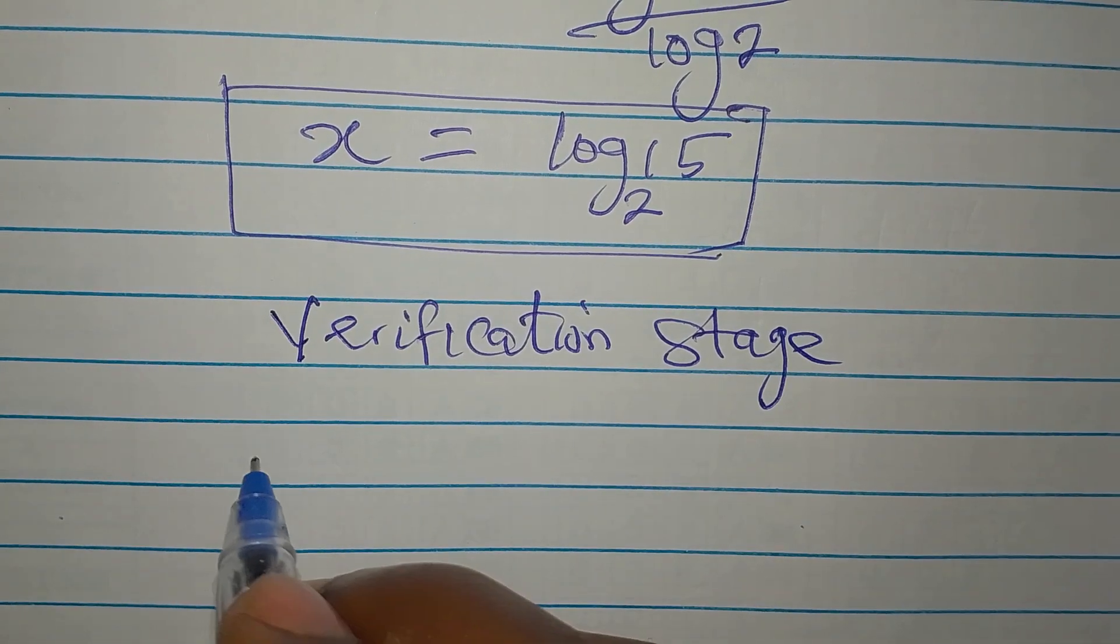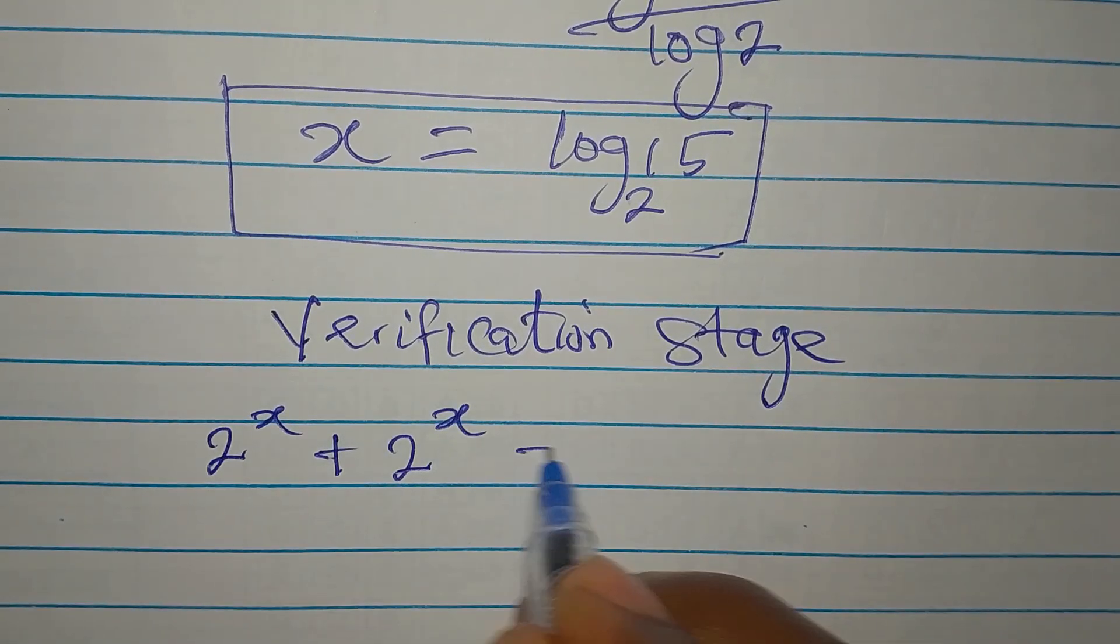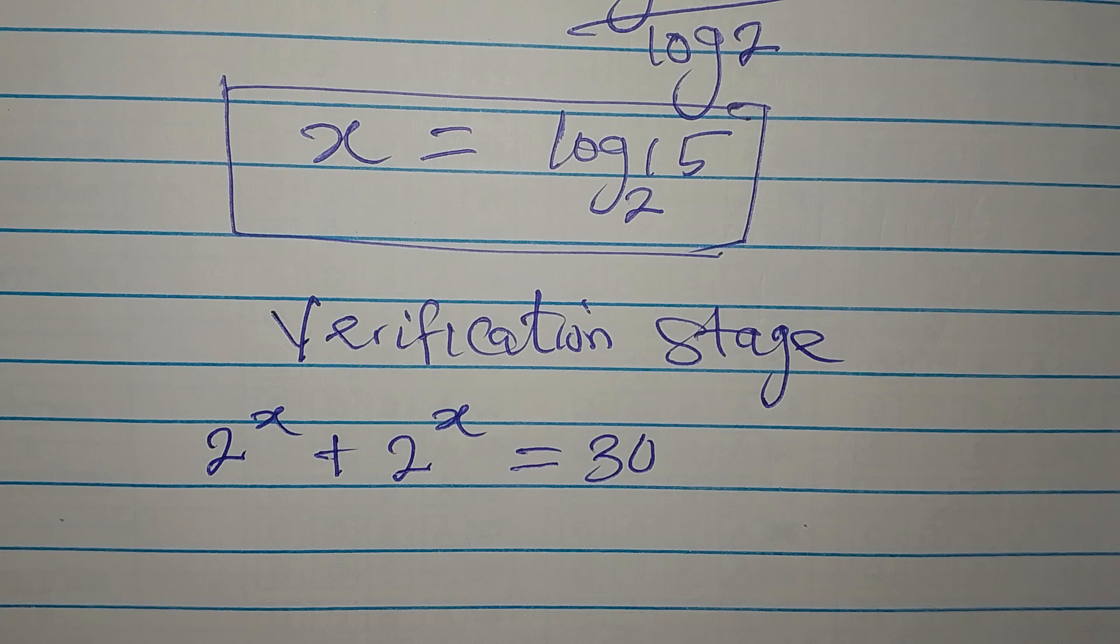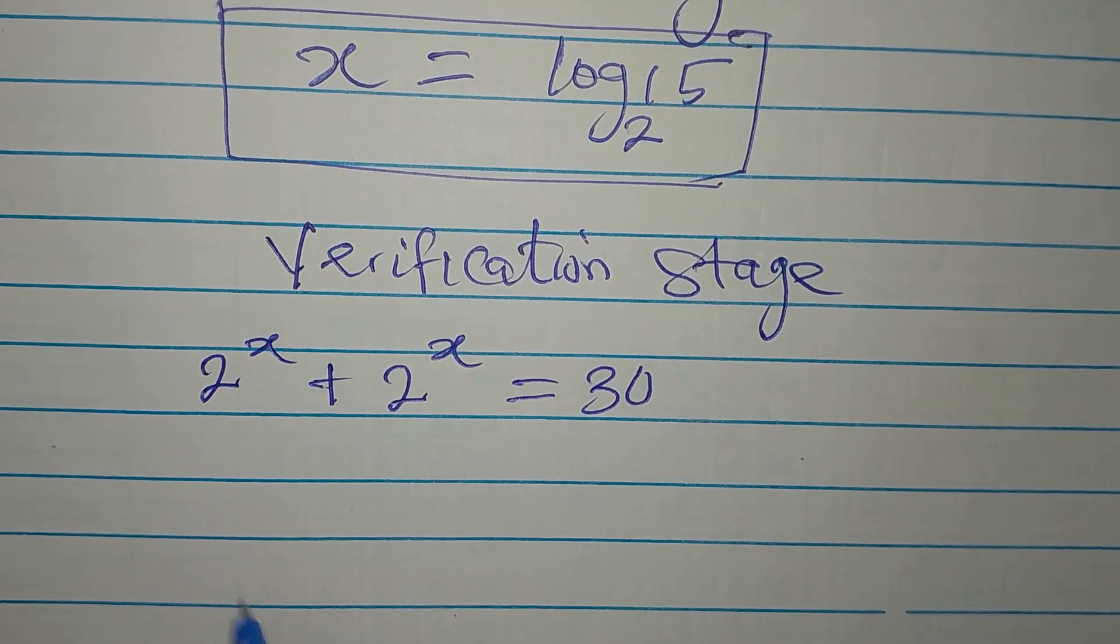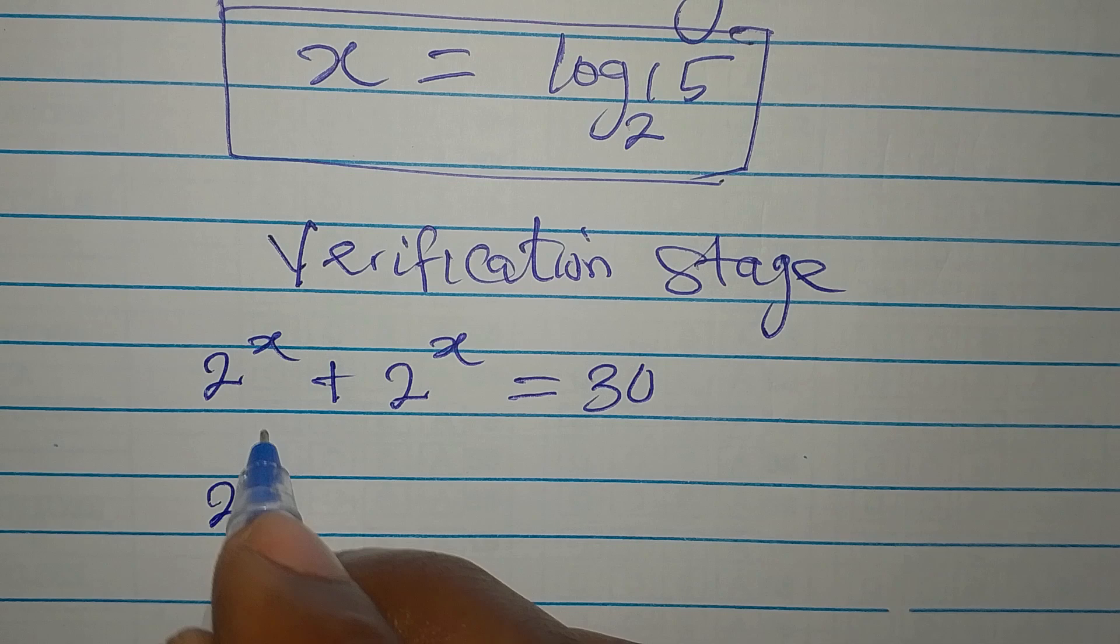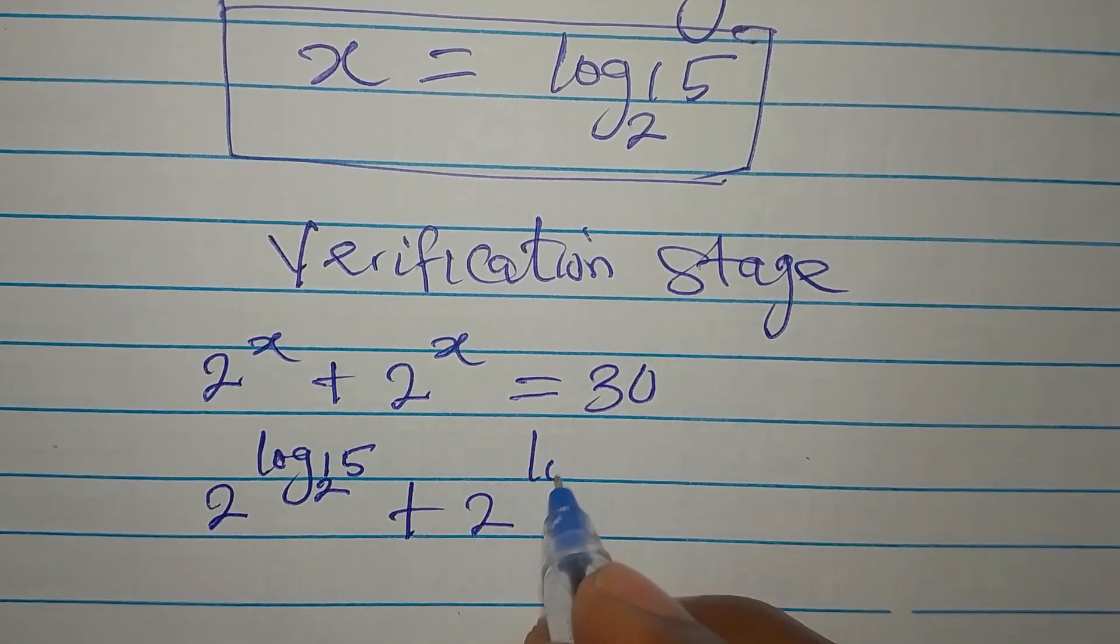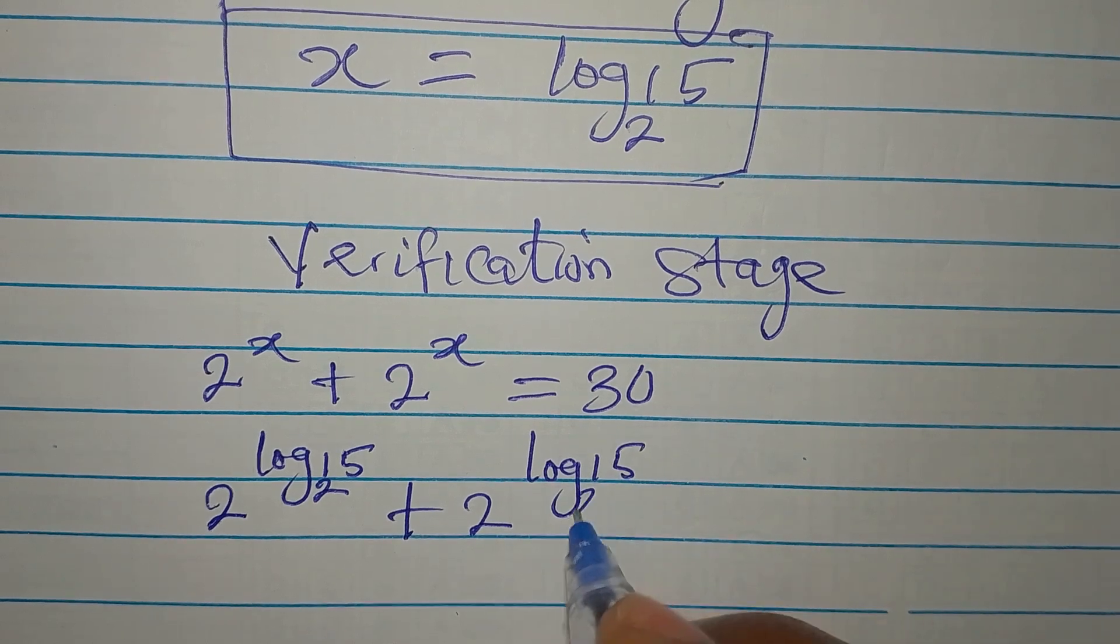The equation is 2 to the power of x plus 2 to the power of x equals 30. So in place of x, I'll write log 15 to base 2. 2 to the power of log 15 to base 2 plus 2 to the power of log 15 to base 2.